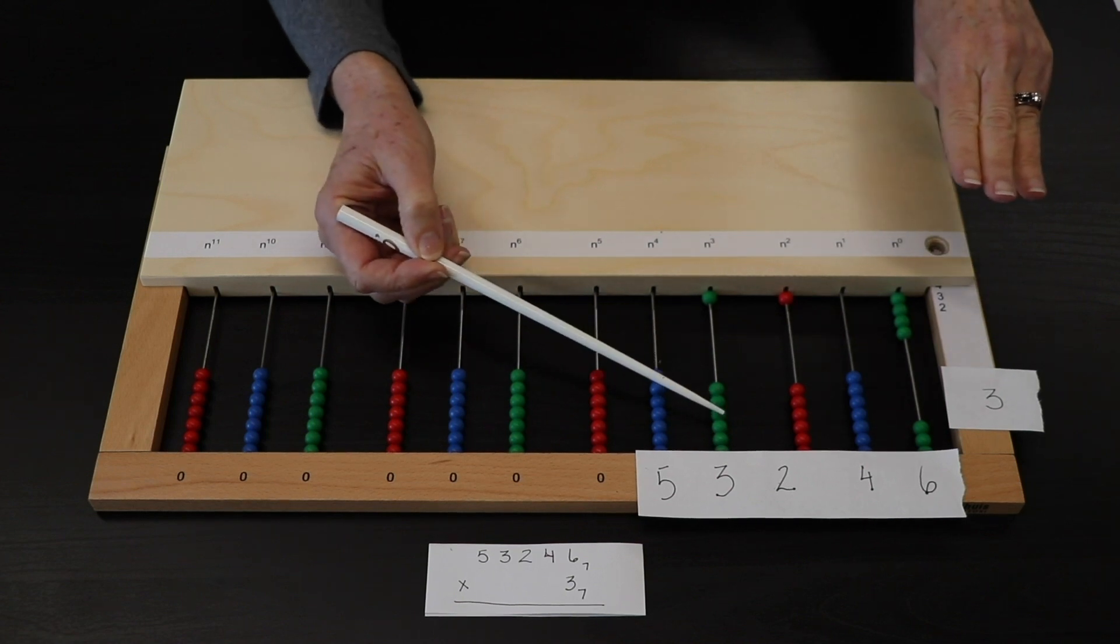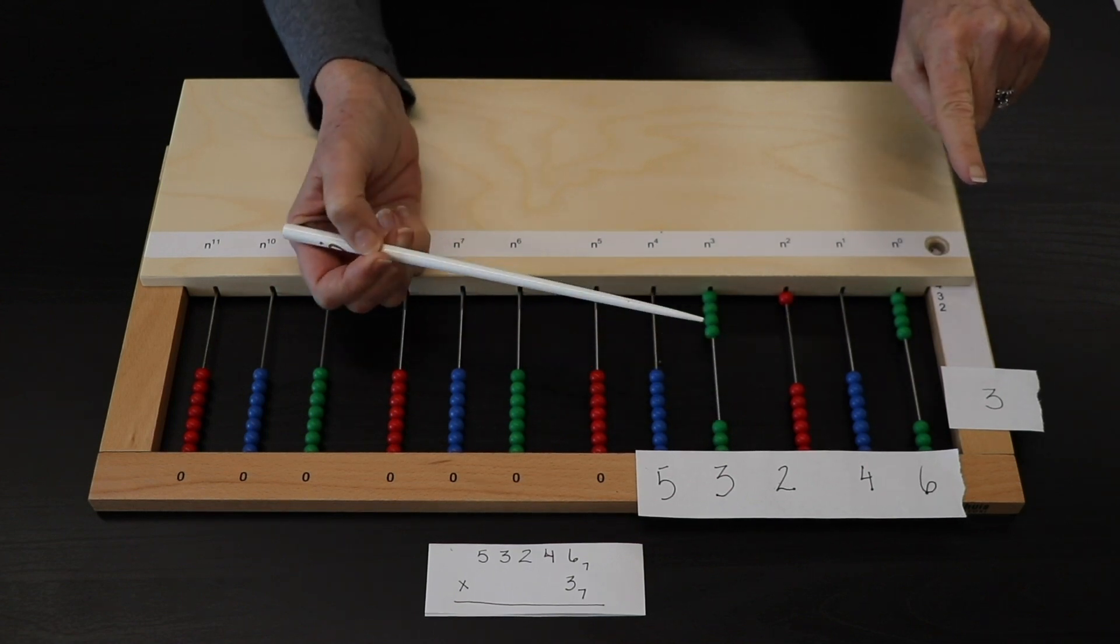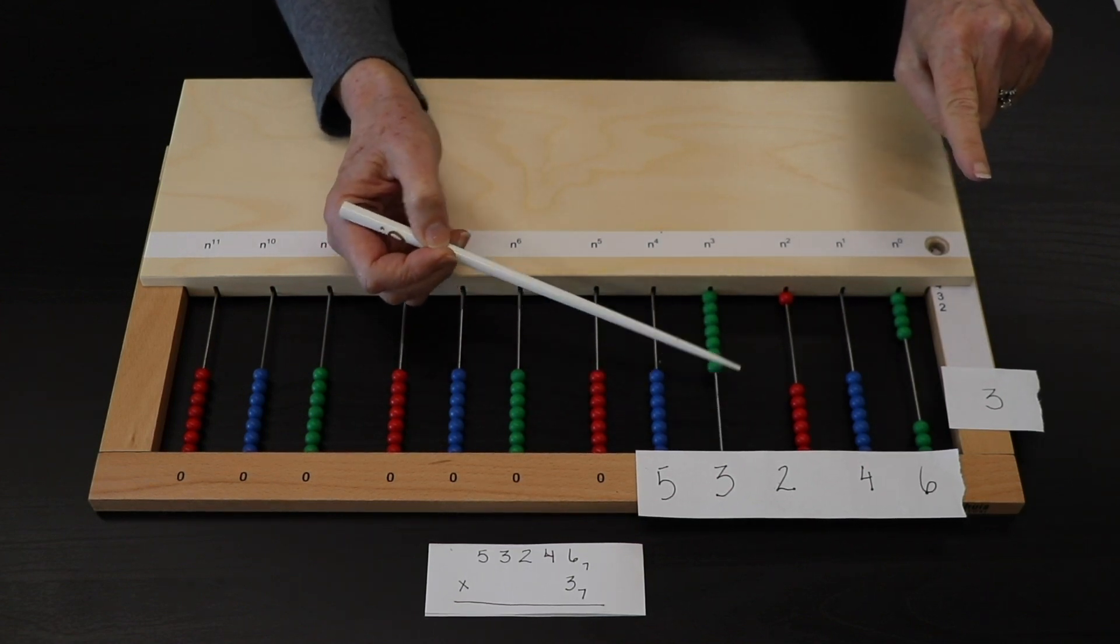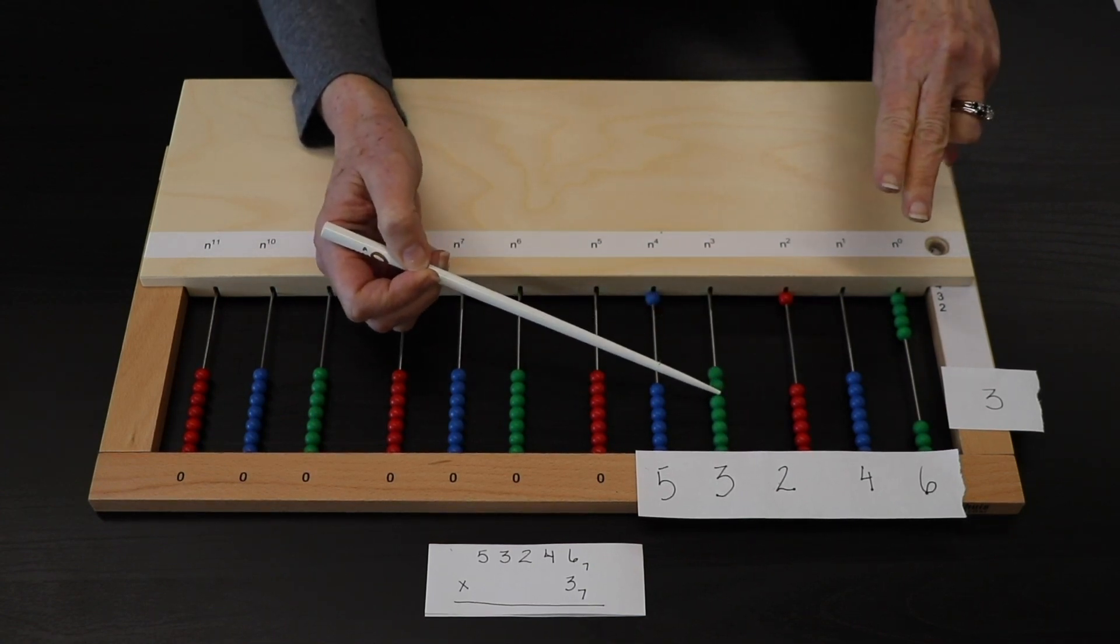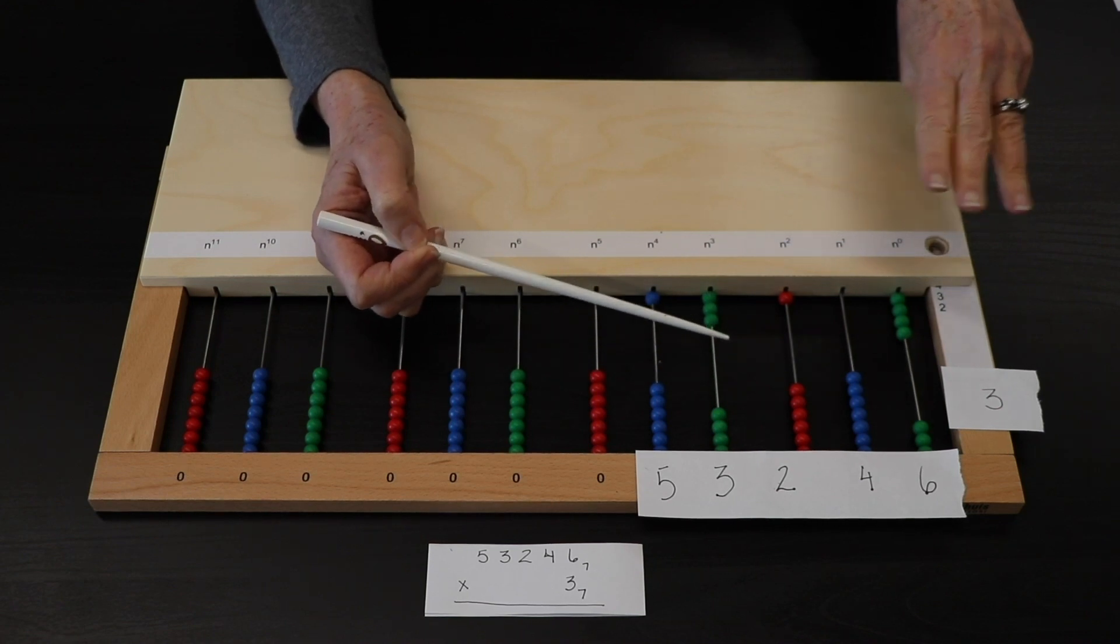A set of 3, taken 3 times. A set of 3, taken once. A set of 3, taken twice.